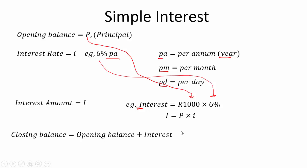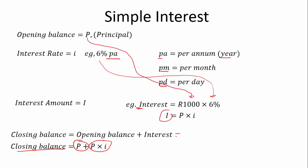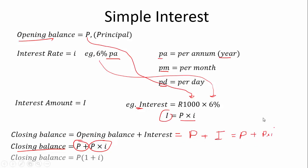Our closing balance equals our opening balance plus our interest. So closing balance equals P plus I, and since I equals P times i, that gives us P plus P times i. We can simplify this by taking out a common factor of P, giving us P times (1 + i). If you're not sure about taking out common factors, make sure you watch the relevant videos on common factors in functions and equations.